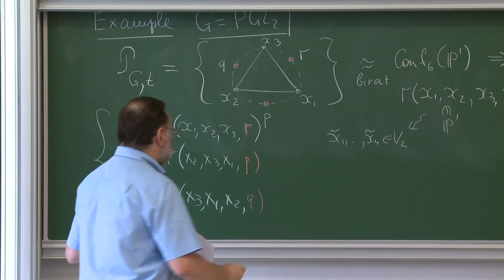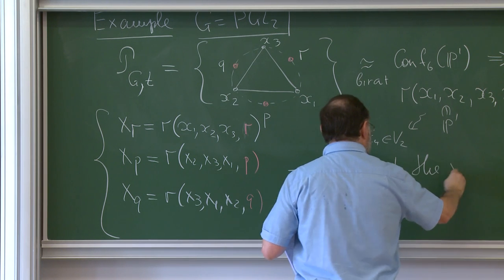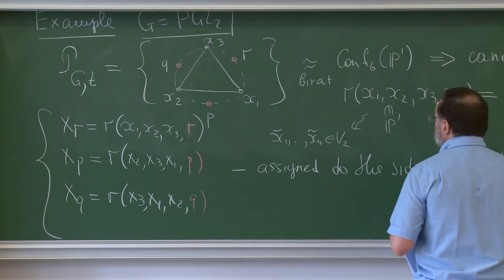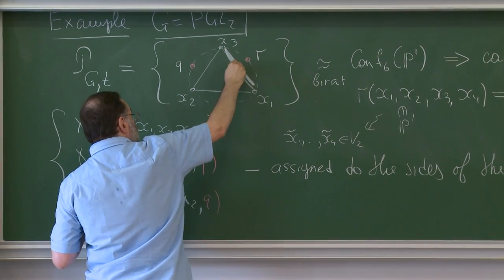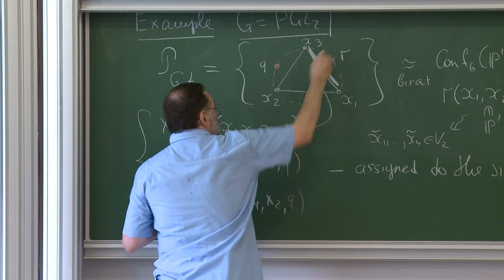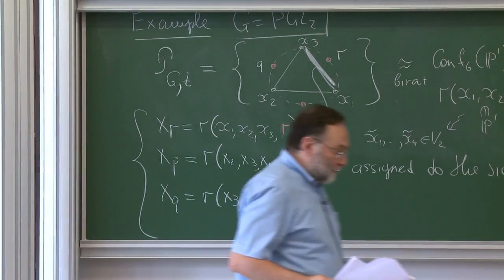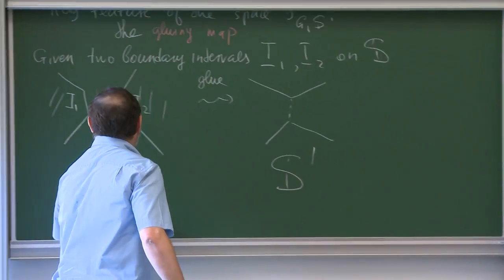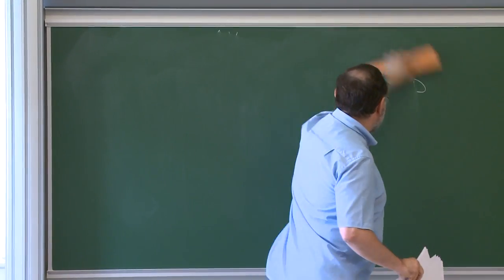The canonical coordinates are assigned to the sides of the triangle. The coordinate X_R is the cross ratio of X1, X2, X3, R, where R comes from the pinning. Cyclically, X_P is the cross ratio of X2, X3, X1, P, and X_Q is the cross ratio of X3, X1, X2, Q. These are assigned to the respective sides of the triangle.